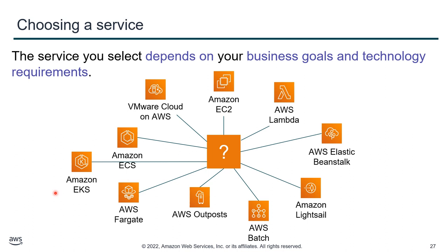For managed ML services, you just use the API endpoint to send data and they perform the operation and return results — you don't run anything on your own computer. If you want to train your own model and choose a machine learning algorithm, SageMaker is available. There are pre-built services like translate, NLP, sentiment analysis, and image processing — all available through APIs where you send data and get results back.